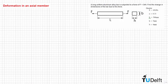In this problem we have a long uniform aluminum alloy bar, which is subjected to a force F equal to 3 kN, and we need to find the change in dimensions of the bar due to this force. We need to consider the change in dimensions in the direction of L, in the longitudinal direction, but also in the direction of B and the direction of H.